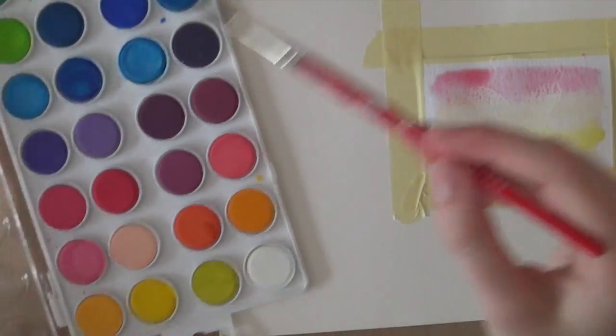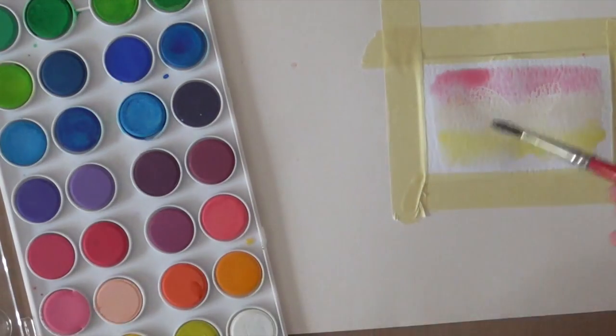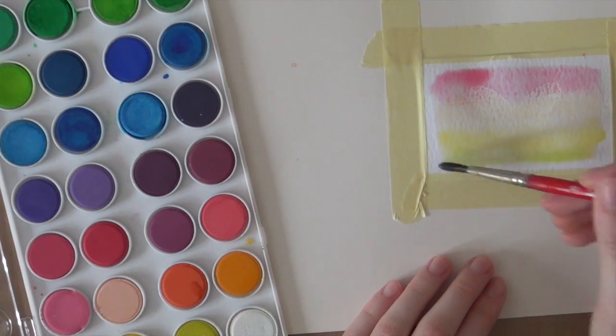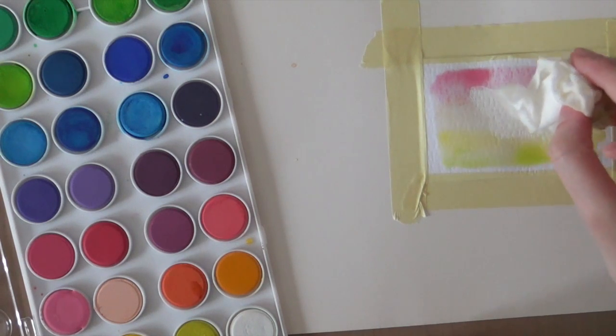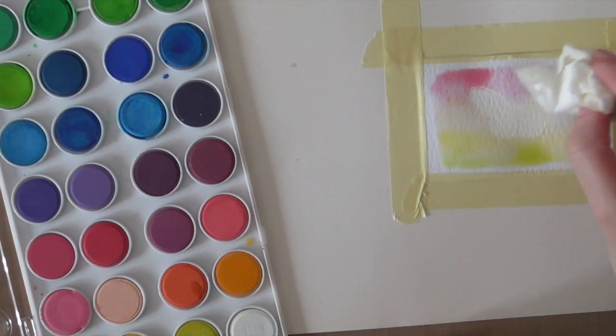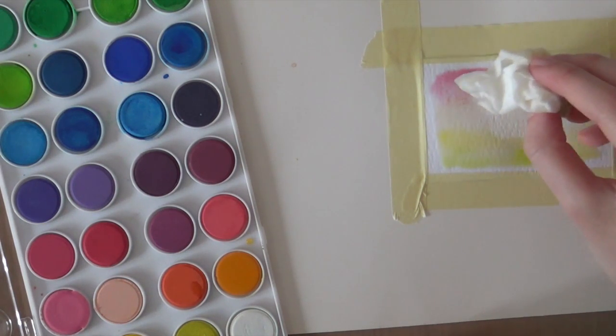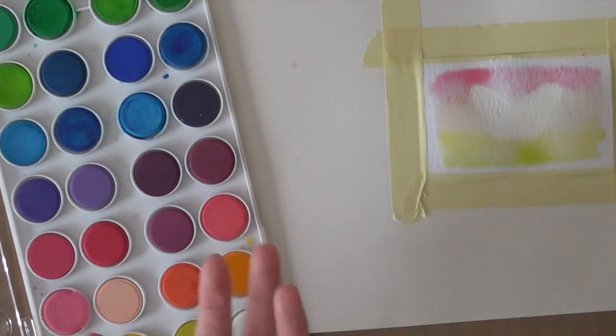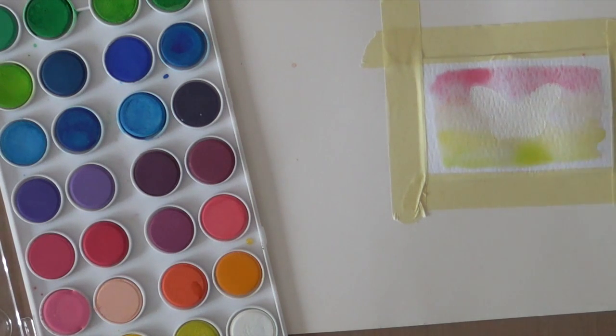And then finally just a hint of green. There we go. I'm just going to clean off my butterfly because there is some watercolor on it. So you can just use a baby wipe to clean it off since it is embossed. So the powder resists the watercolors.